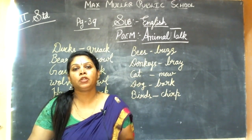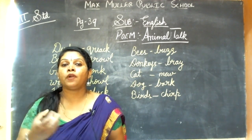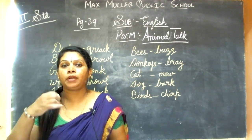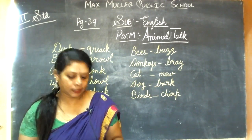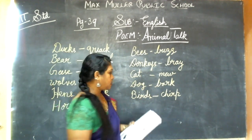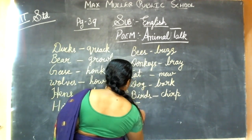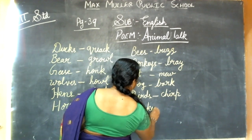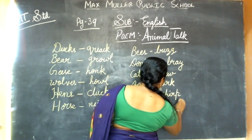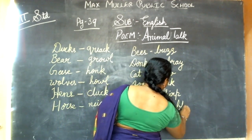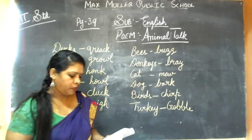Turkeys gobble. Gobble means it is like a swallowing sound from inside the throat. So turkeys gobble — G-O-B-B-L-E, gobble. The turkey is a type of bird.